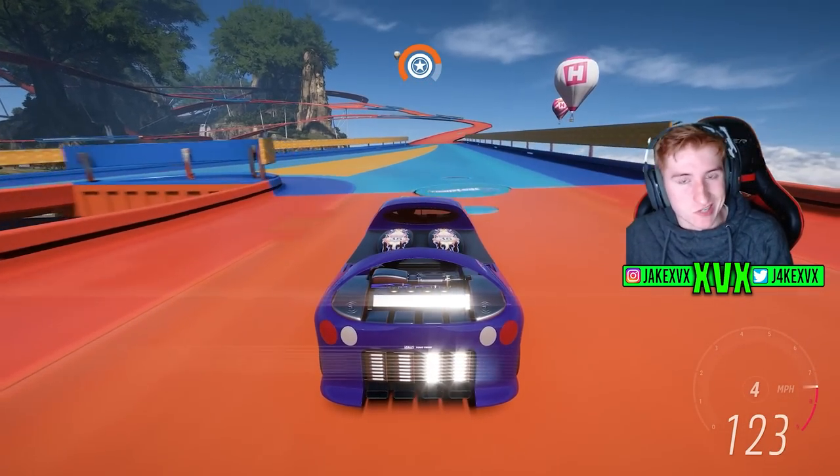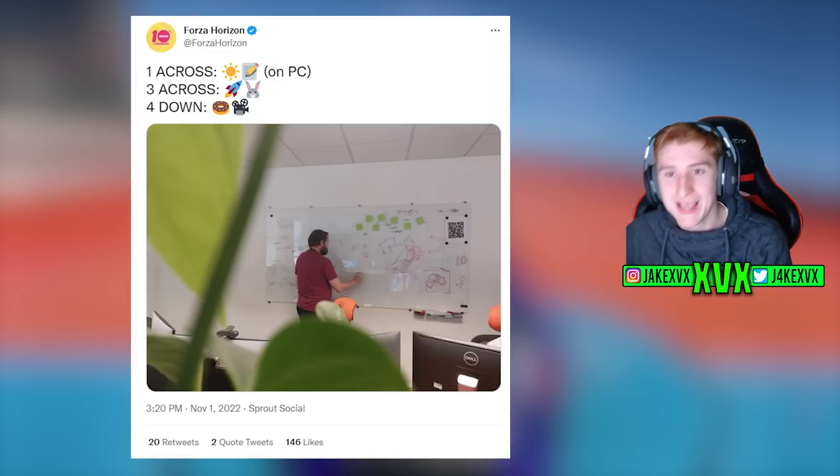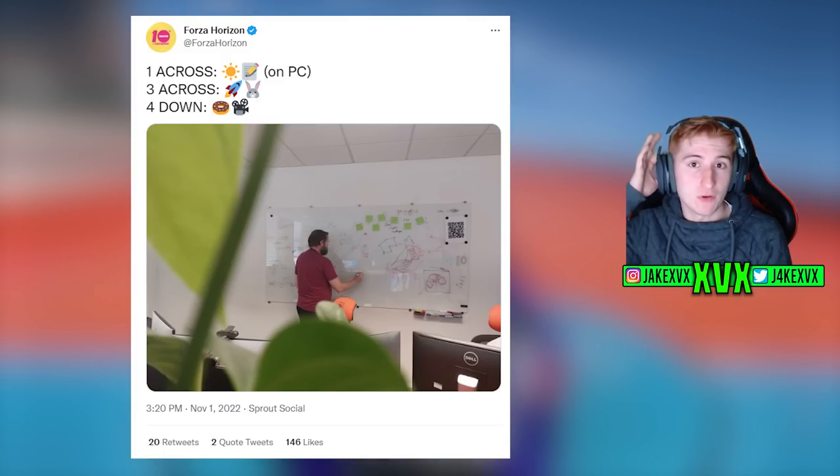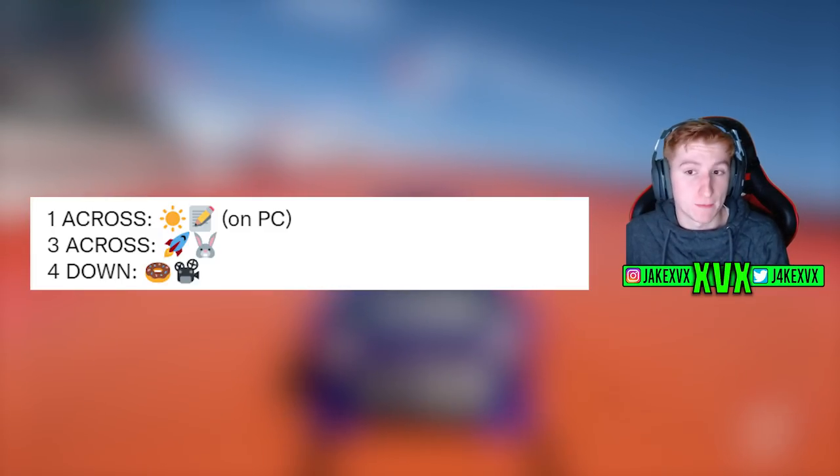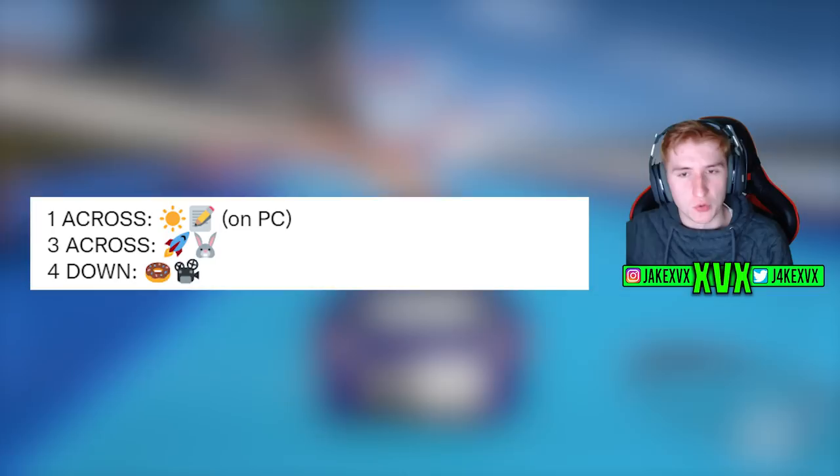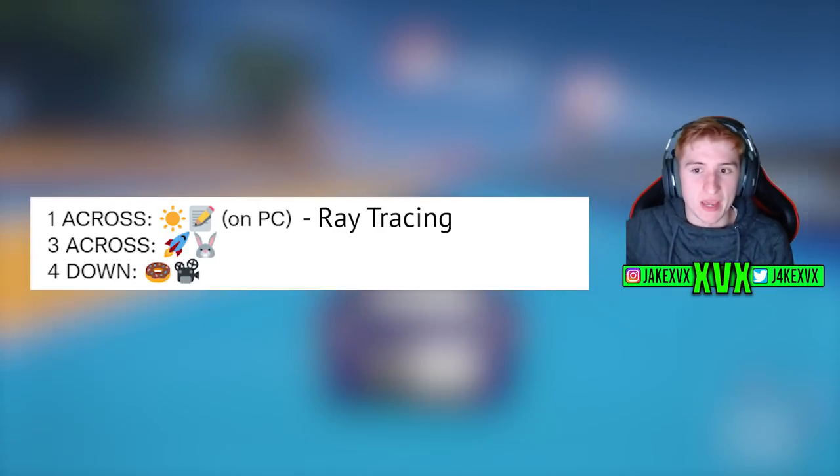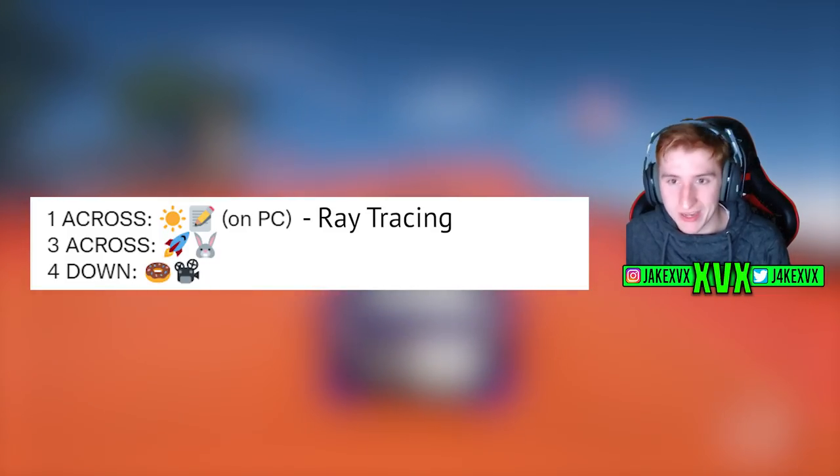This month's Torban Tuesday is quite an interesting one. If we go over to Twitter, we can see the tweet by Forza Horizon themselves and it says one across, three across, four down and then below it we have the Torban Tuesday image. Now if we have a look at the text at first, we can actually figure out what all of this text means based on the emojis. We know that one across appears to be a sun with a notepad. Now we believe that to be ray tracing. You know, sun rays and then paper, you sort of trace onto paper. So I believe this means ray tracing on PC.